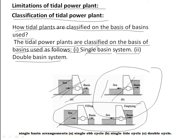In the single tide cycle system (figure B), water is made to enter into the basin through turbines during high tides. When the high tide period is over, the sea level starts falling, which reduces the head on turbines. Power generation is stopped as the sea level reduces with the onset of low tides. The basin is drained of water through the sluice gates, and the power output is therefore intermittent.